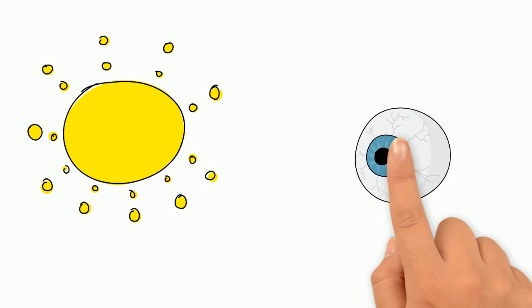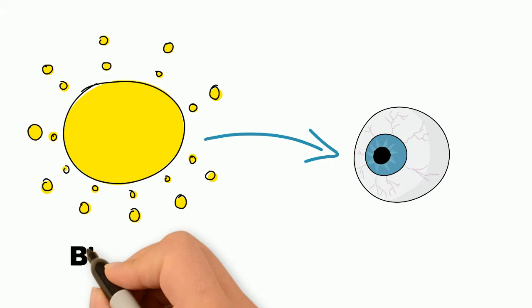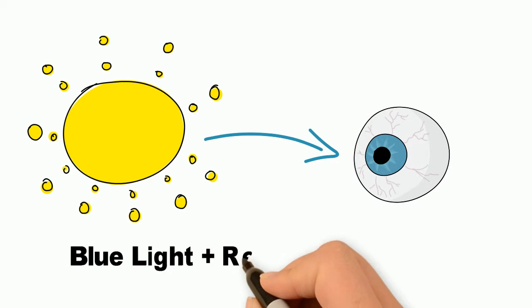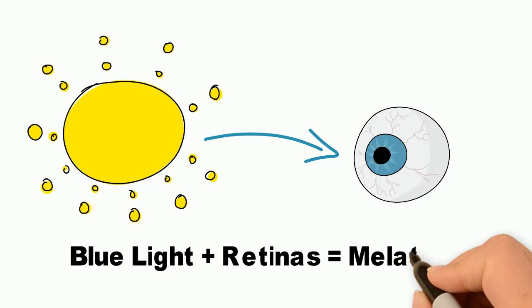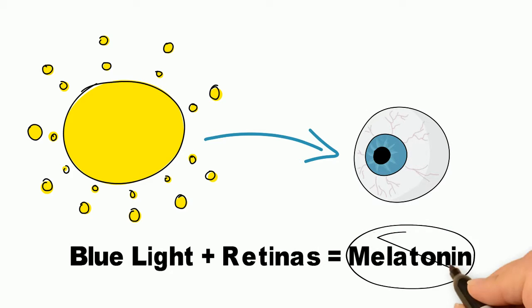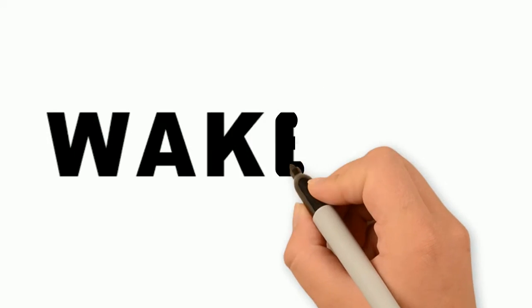When sunlight hits our eyes in the morning, blue wavelengths of light react with the melanopsin receptors in our retinas, blocking production of the powerful sleep hormone, melatonin. This essentially tells our bodies, wake up!